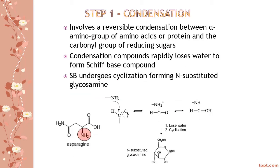Step one is also called the condensation step. It involves reversible condensation between the alpha amino group of an amino acid and the reducing sugar. An amino acid has two types of amine groups; the one that reacts with the reducing sugar is the amine at the alpha carbon — the carbon next to the carboxyl group. This NH2 amine group acts as a nucleophile because nitrogen has a lone pair of electrons, so it attacks the carbon of the reducing sugar, which is the most positive carbon because it is attached to oxygen, an electron-withdrawing atom.